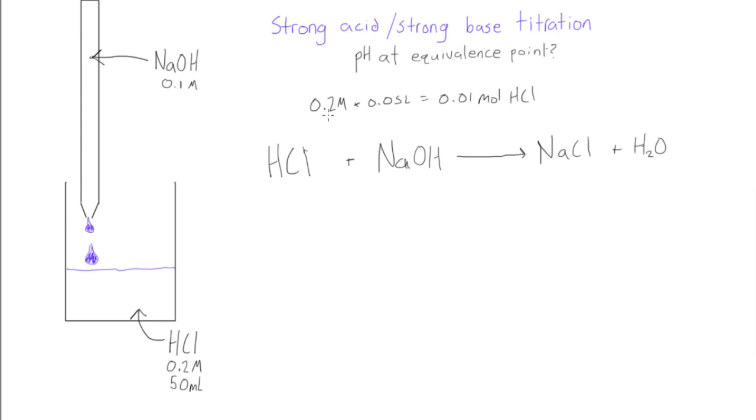We know that we have 0.1 molar NaOH, so we can write it here 0.1 molar, and we just want to find out what volume we need to get 0.01 moles of NaOH. We just rearrange this and we're gonna find that we need 0.1 liters of NaOH to get the 0.01 moles of it down in our beaker.